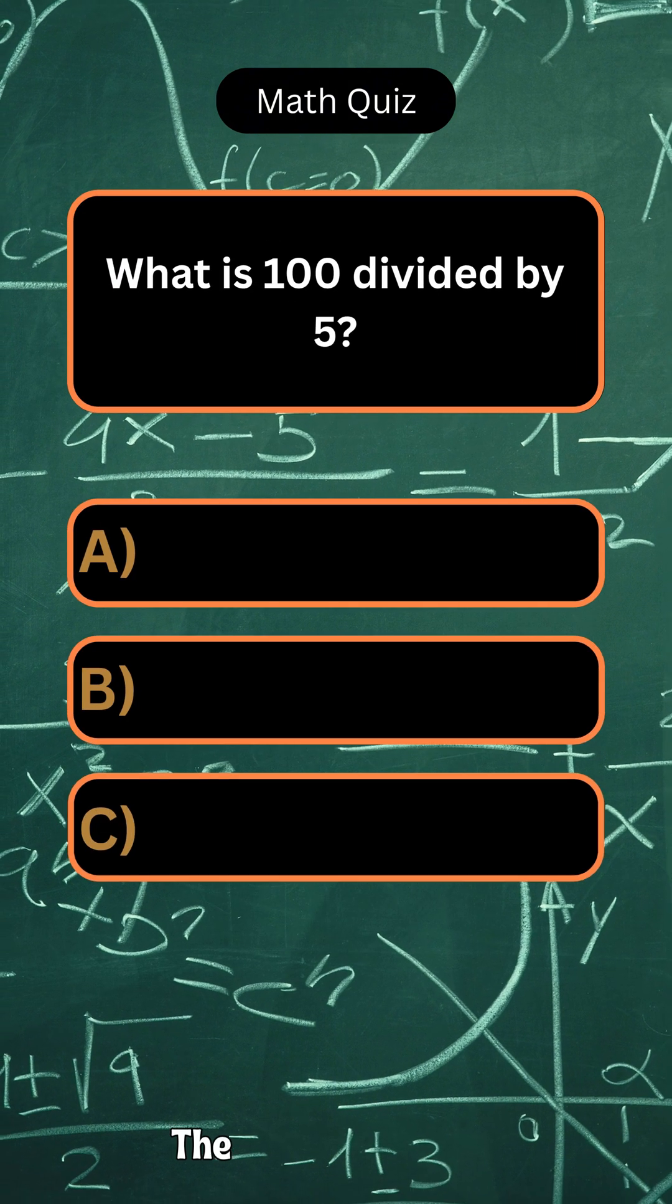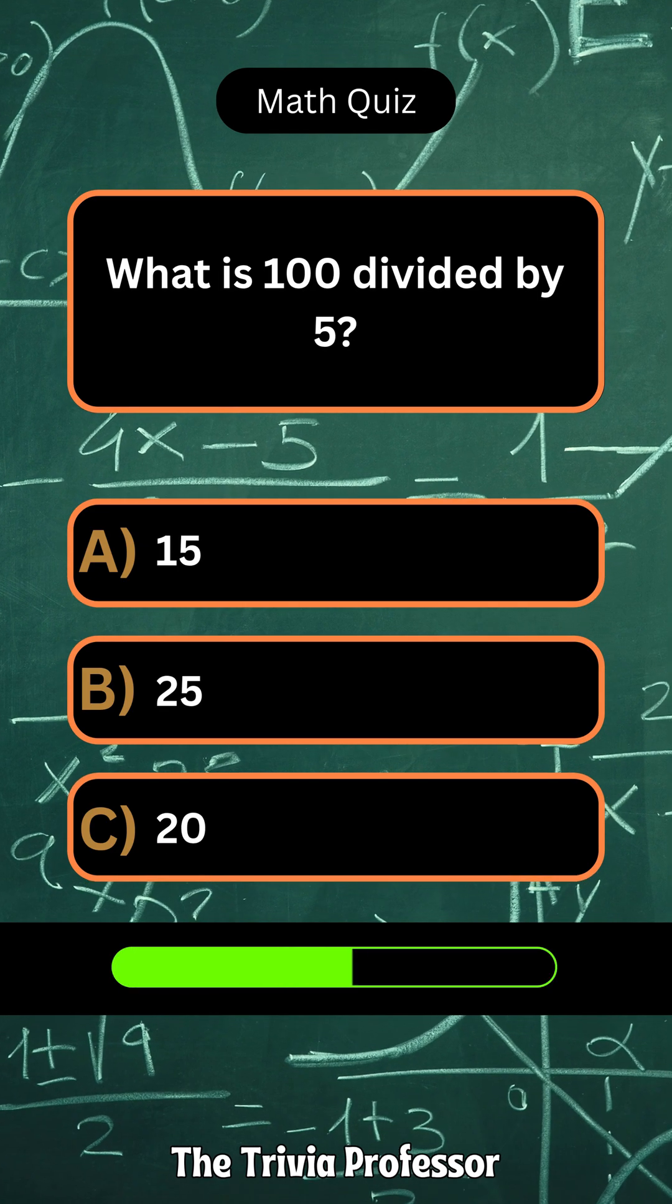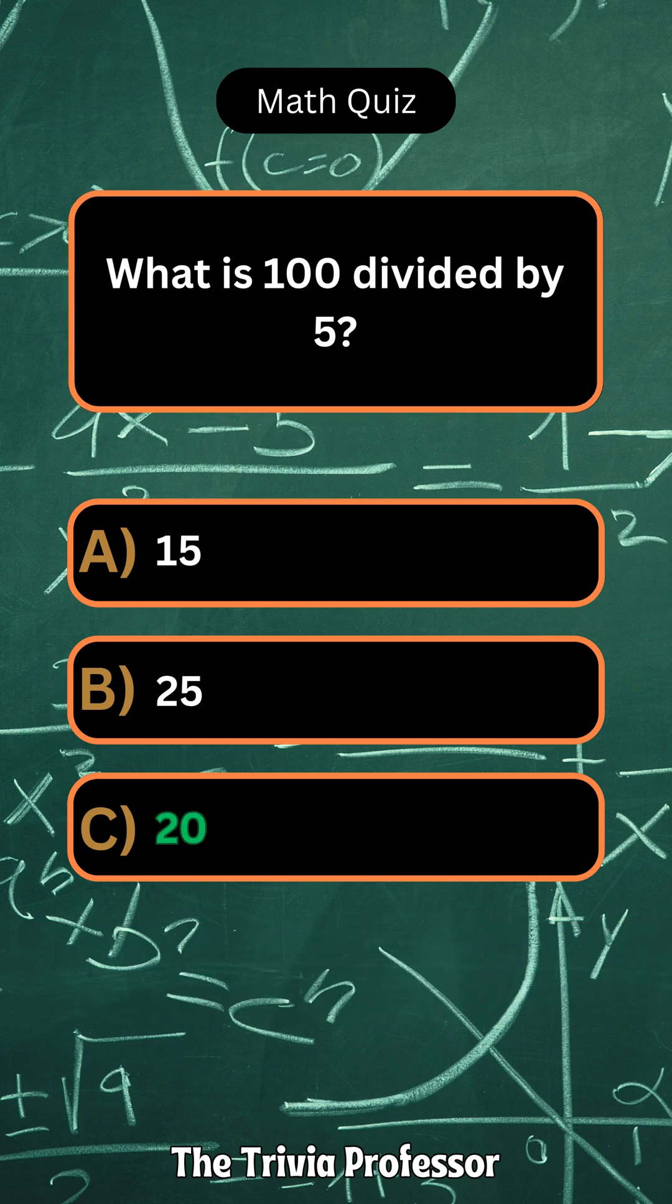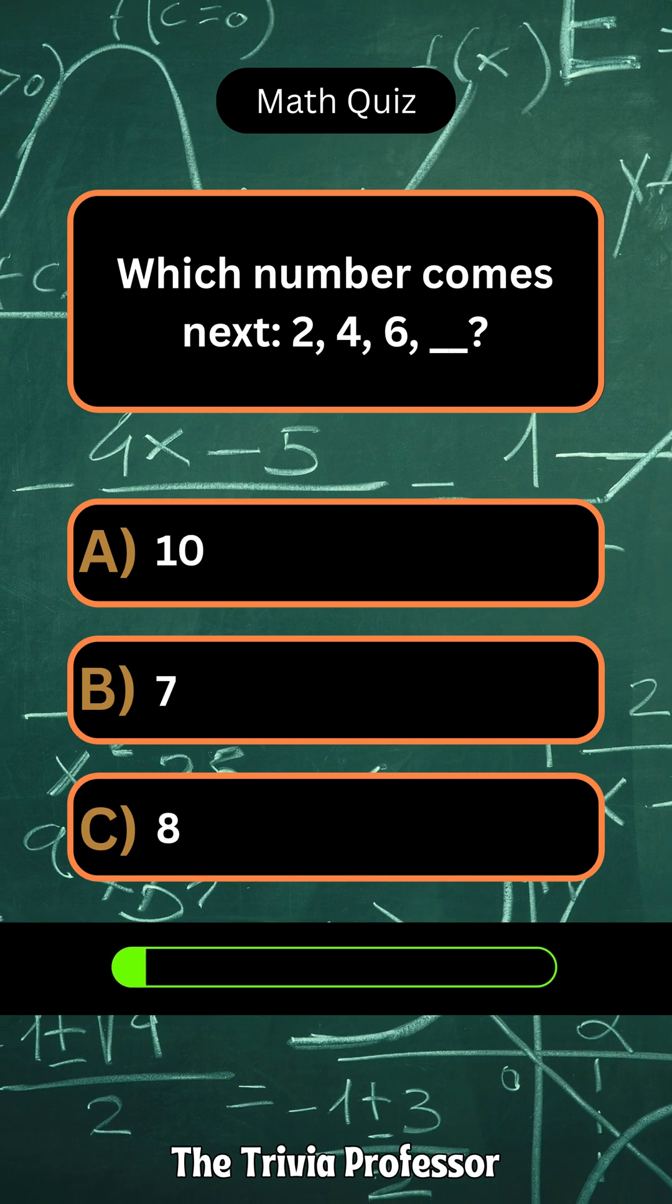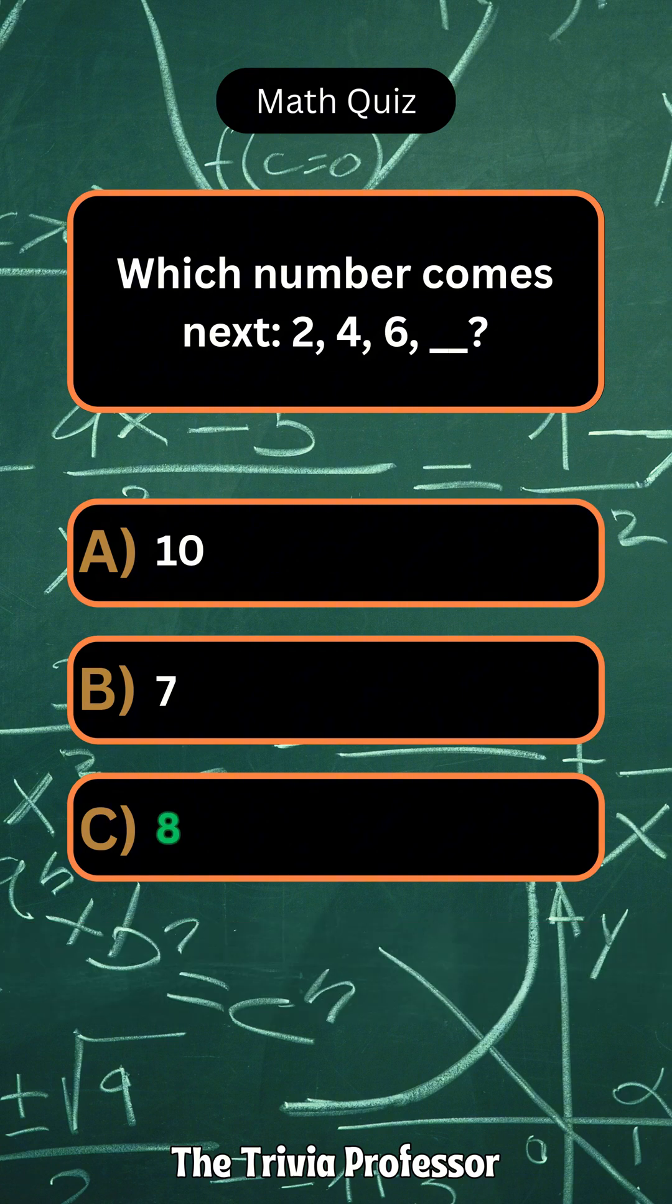What is 100 divided by 5? 20. Which number comes next? 2, 4, 6? 8.